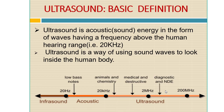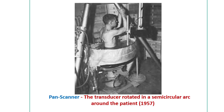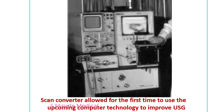When ultrasonography was first invented, it was called the pan scanner. A transducer rotated in a semicircular arc around the patient. This was invented in 1957 and is the early form of ultrasonography. The scan converter allowed, for the first time, the use of emerging computer technology to improve ultrasonography.